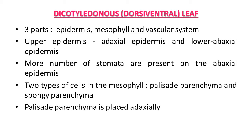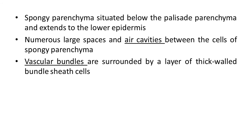The mesophyll, the middle region, is made up of parenchymatous tissue. Two types of parenchymatous tissue are present: palisade parenchyma and spongy parenchyma. Palisade parenchyma is arranged on the upper side and spongy parenchyma just below it. Palisade parenchyma cells are pillar-shaped and compactly arranged, while spongy parenchyma cells are oval to round in shape. There are numerous large intercellular spaces and air cavities between the spongy parenchyma cells.